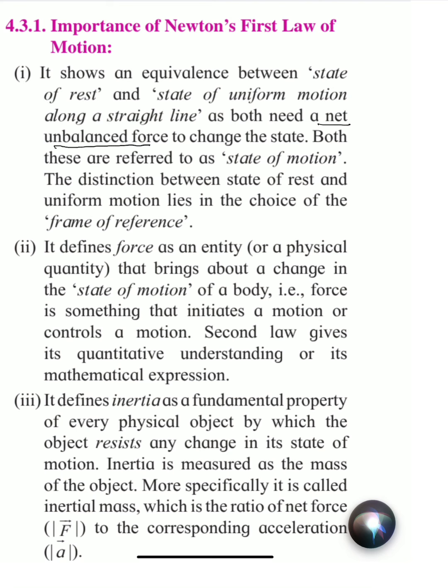The state of rest and the state of uniform motion along a straight line are natural states. These are equivalent states — there is no change unless an unbalanced force acts. The state of rest and state of uniform motion are considered equivalent natural states.